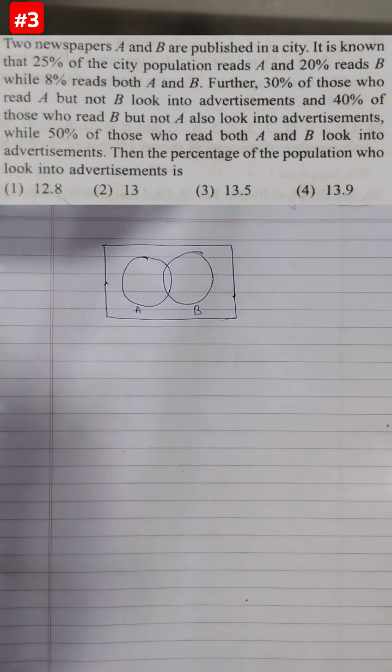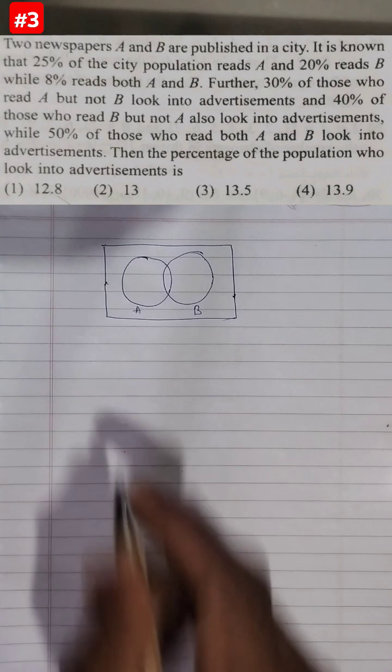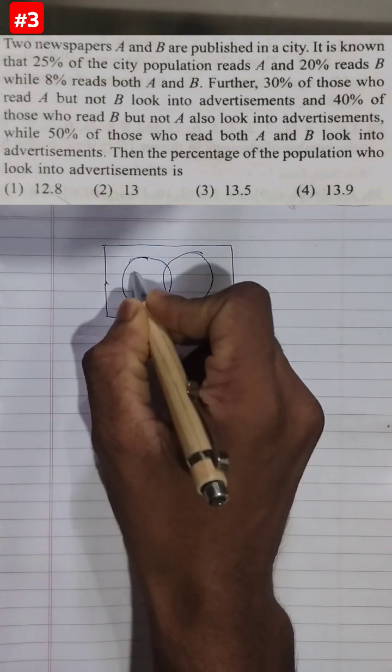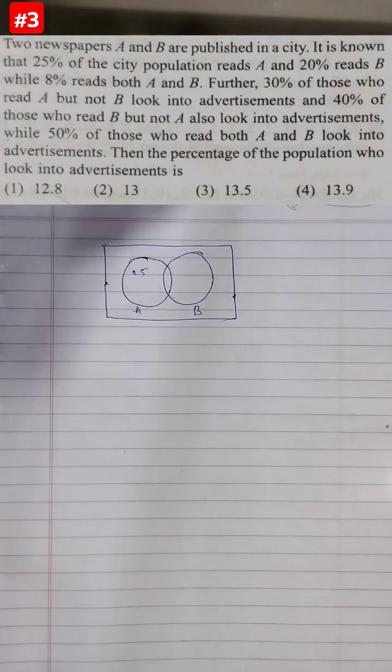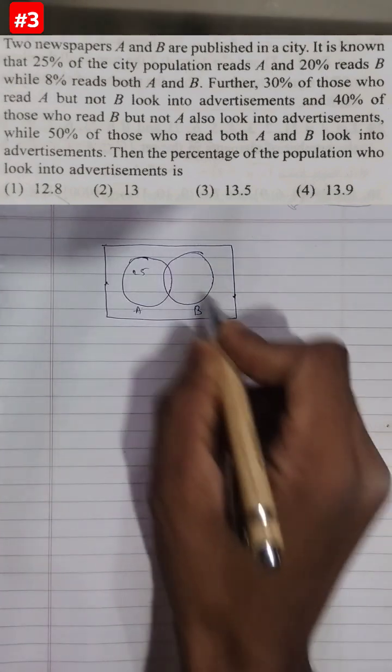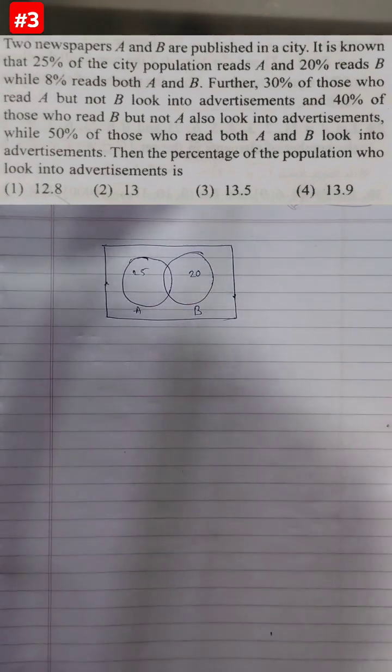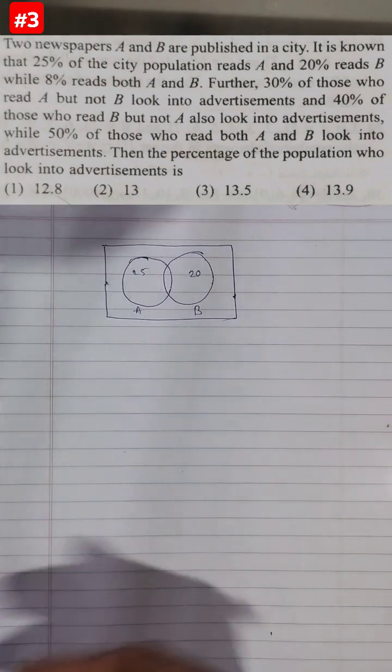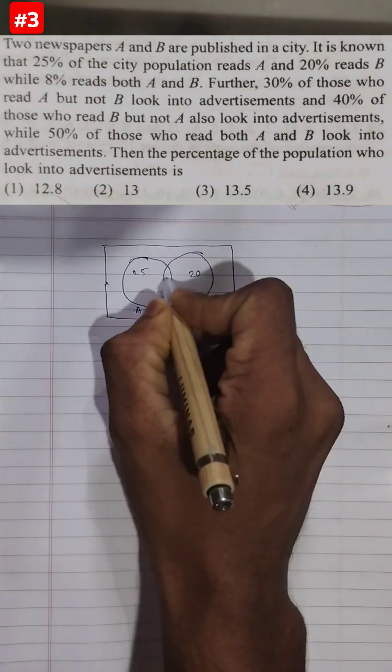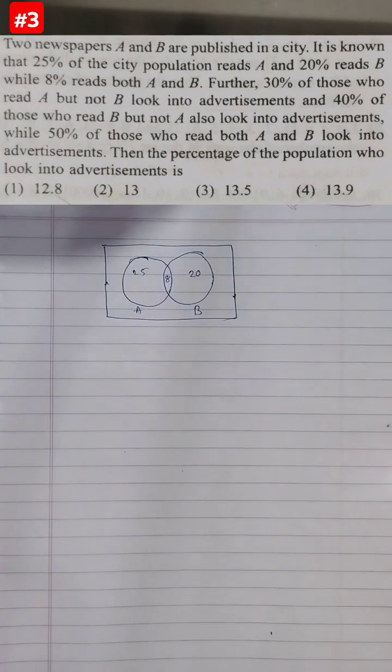25% of the city population reads A. That is, this entirely is 25%. Let's take the total population as 100, so we can say that this is 25. B is 20. While 8% read both A and B, so 8% here.